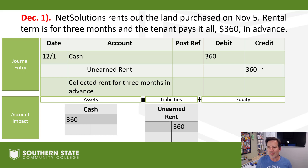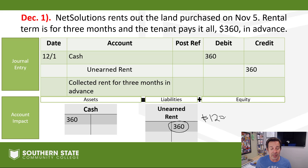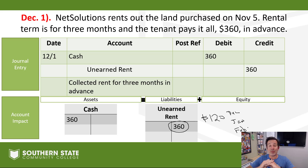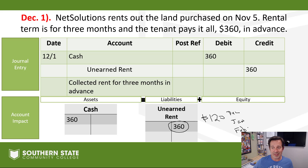If you think about how much that is per month: we took $360 from the tenant for three months of rent, so that's $120 a month. We'll earn $120 in December, $120 in January, and $120 in February until that liability is gone. We'll talk about how to make that adjusting journal entry next week in our adjusting entries chapter.